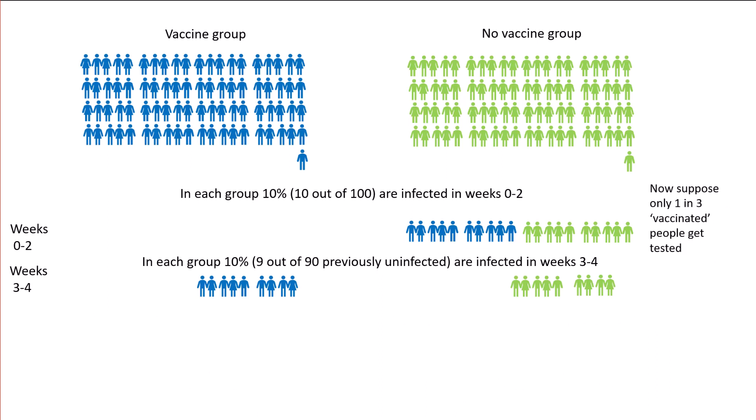But things can get even more ridiculous. It's quite common for those classified as vaccinated to be less likely to be tested for the disease than those who don't get the vaccine. For example, in the big observational trial of the Pfizer vaccine in Israel, each unvaccinated person was six times more likely to be tested in any given week than a vaccinated person.